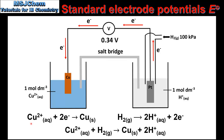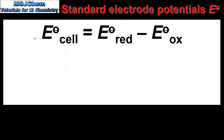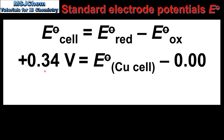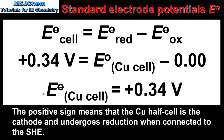Next we look at how to calculate the standard electrode potential of the copper half cell, using the same equation as before. The cell potential was positive 0.34 volts and the copper half cell underwent reduction. From this we get the standard electrode potential for the copper half cell of positive 0.34 volts. The positive sign tells us that when connected to an SHE the copper half cell will be the cathode.